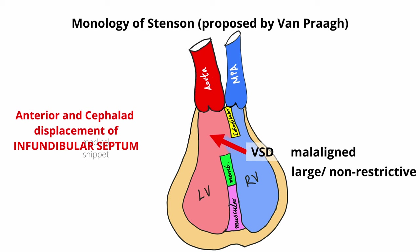The VSD in Tetralogy of Fallot is a perimembranous defect with extension into the sub-pulmonary area. Due to the anterior and cephalad displacement of the infundibular septum, there is narrowing of the right ventricular outflow tract, causing RVOT obstruction.